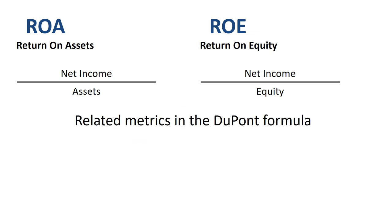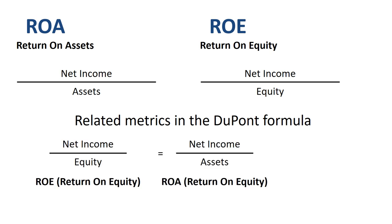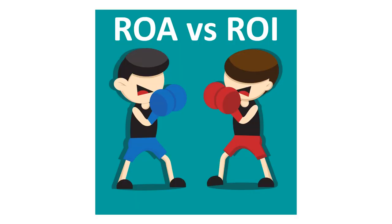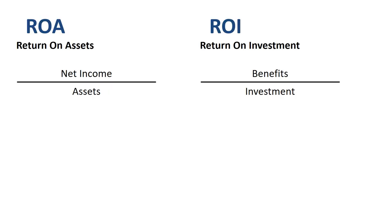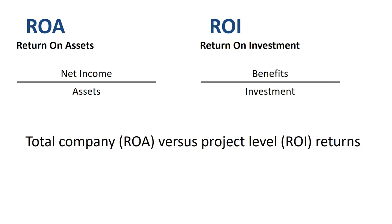ROA and ROE are related metrics in the DuPont formula: ROE equals ROA times leverage. In the blue corner ROA, in the red corner ROI. Return on assets and return on investment are similar, but used in very different situations. ROA is used when analyzing the financial statements of a company in an annual report, while ROI is used when analyzing a specific investment like a machine or a piece of software, or the expected return on bonds or stocks.